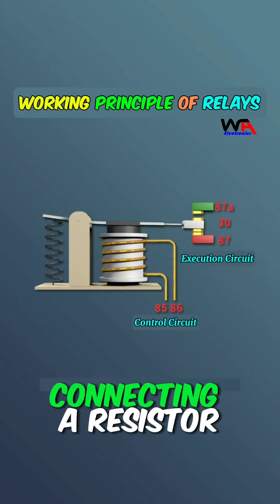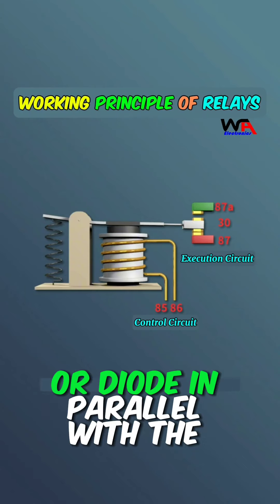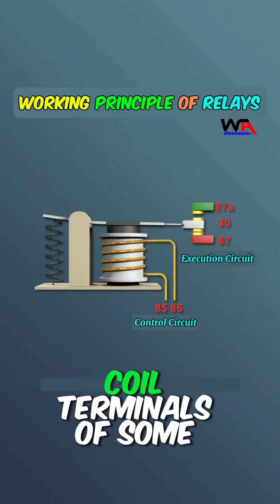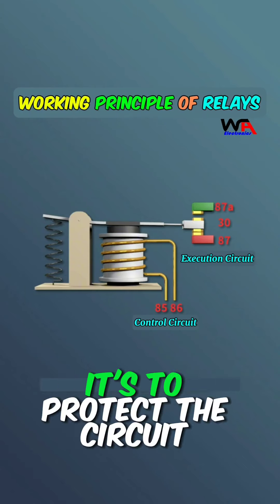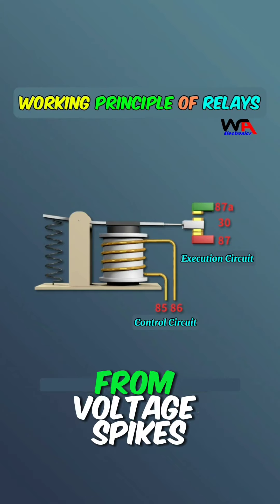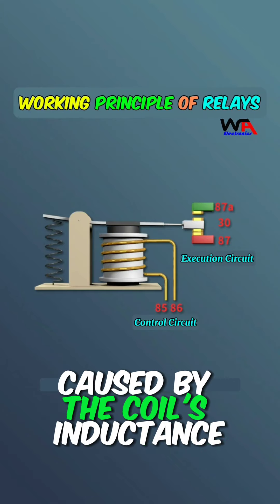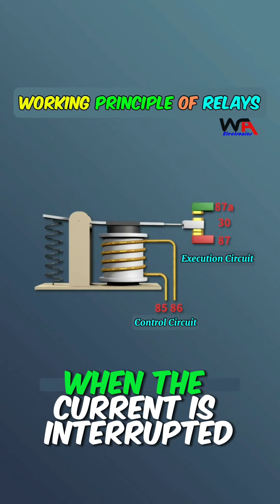Do you know the purpose of connecting a resistor or diode in parallel with the coil terminals of some relays? It's to protect the circuit from voltage spikes caused by the coil's inductance when the current is interrupted.